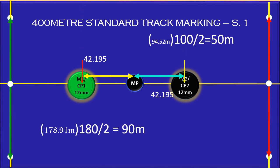We have to fix the nails here. The diameter of the nail is 12mm as per the World Athletic suggestion. This is the optimum straight 84.39 meters to lay out a 400m standard track.